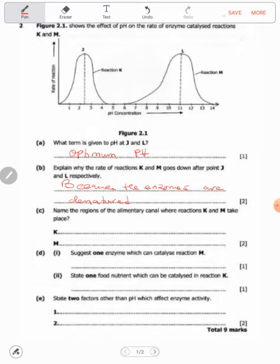Name the regions of the alimentary canal where reactions K and M take place. Look at K - the pH concentration from zero to seven is acidic, so reaction K can only occur in the stomach because the stomach is acidic.